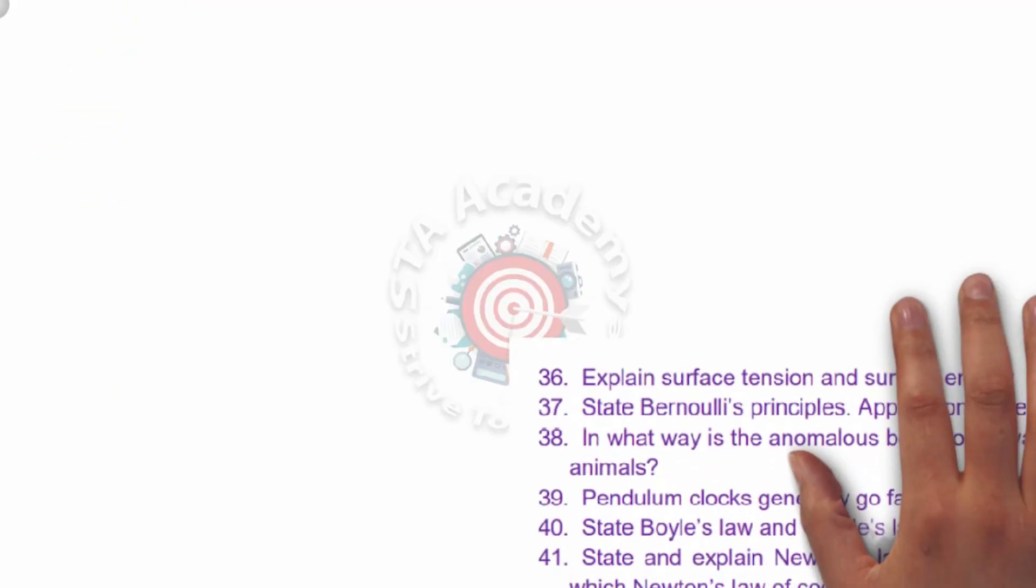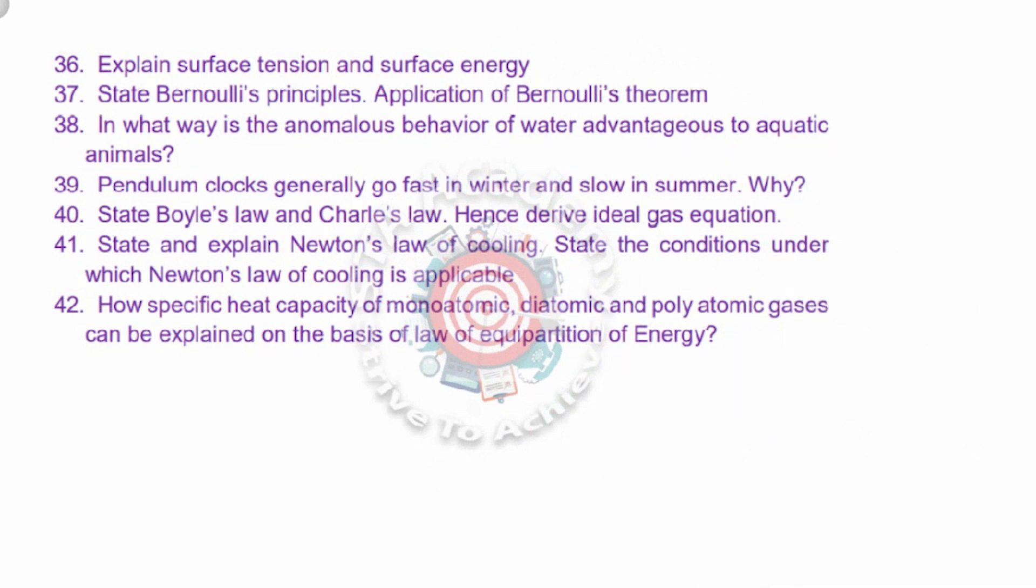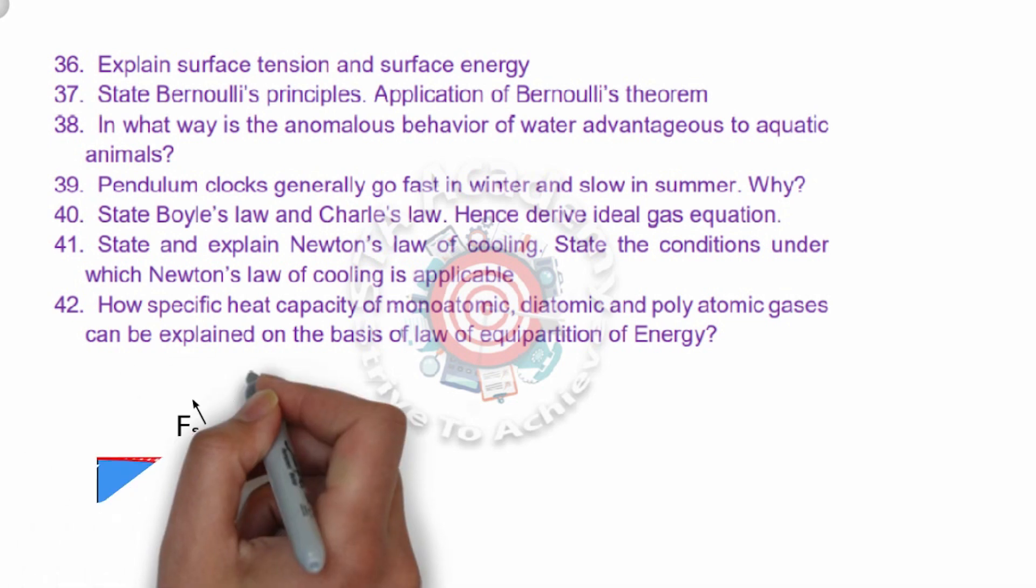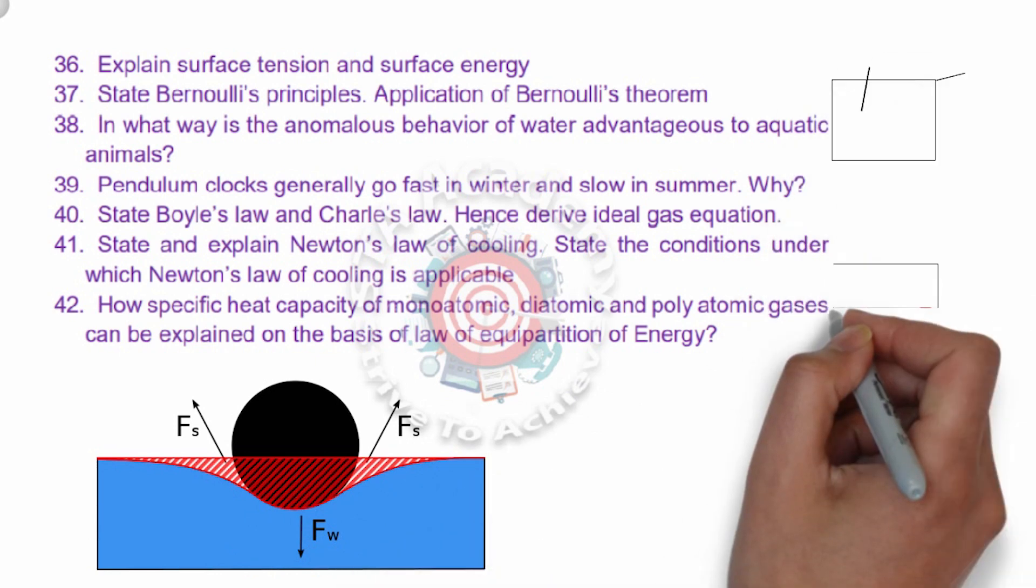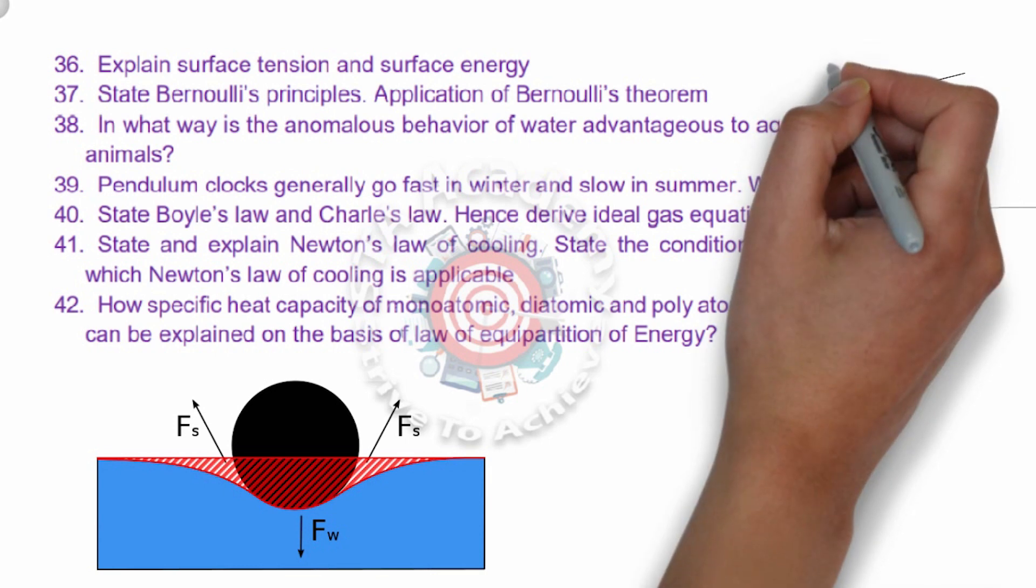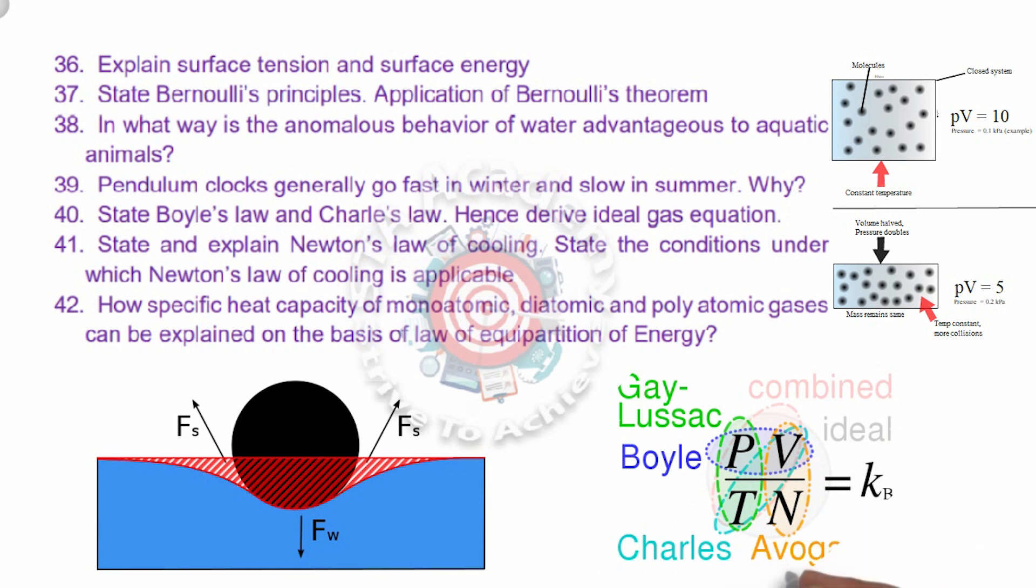Thirty-sixth is surface tension and surface energy. Thirty-seven is state Bernoulli's principle. Thirty-eight is also a very important advantageous to aquatic life due to behavior of water. Thirty-nine: pendulum clock generally goes fast in winter, slow in summer. Why? That is you have to give the reason. Forty is state Boyle's law, Charles law, derive ideal gas equation. Forty-first is explain Newton's law of cooling. Forty-second is the last SAQ, very important: monoatomic, diatomic, polyatomic gases can be explained on the basis of law of equipartition of energy.